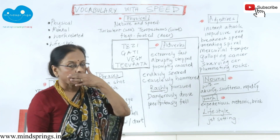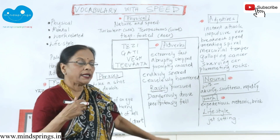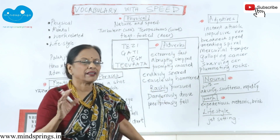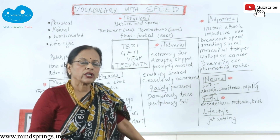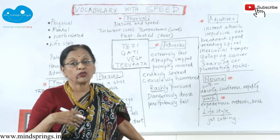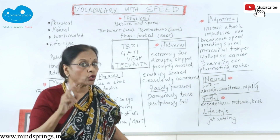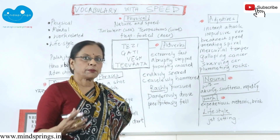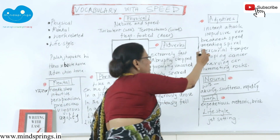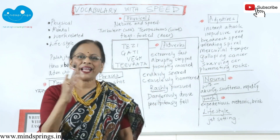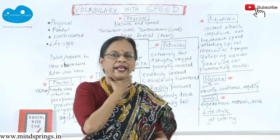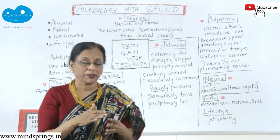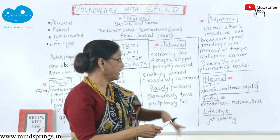Adjectives: 'impulsive' — you can have an impulsive run. Rash and impulsive are one type. You can cross impulsively, or cross rashly. Then 'breakneck speed' — this is a very good word. When you say 'he drove at breakneck speed,' breakneck means breaking your neck — a speed that could kill you.